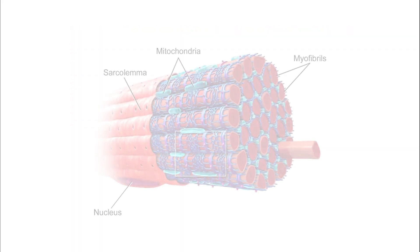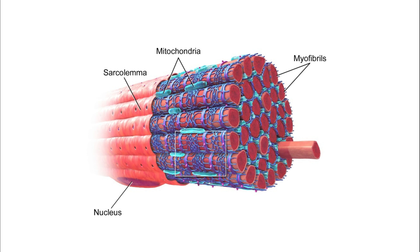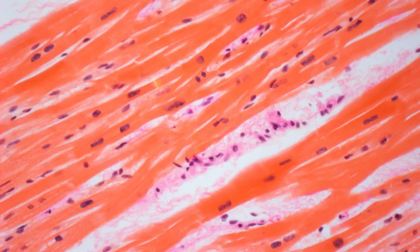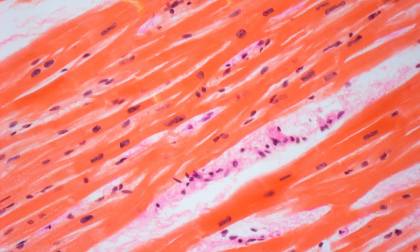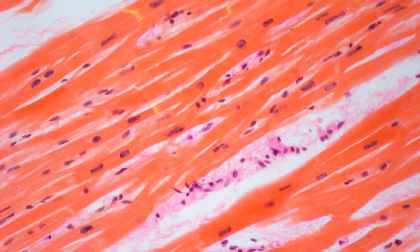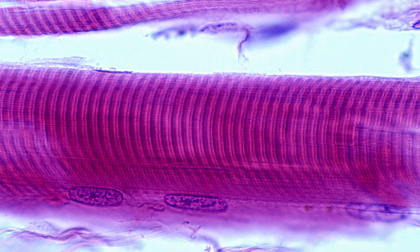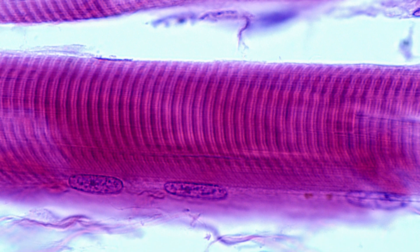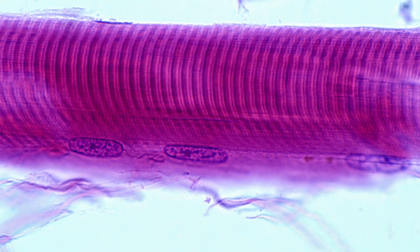Another essential task for the smooth ER in muscle cells is detoxification. This organelle assists in breaking down and removing harmful substances from the cell, contributing to the overall health of the muscle tissue. By keeping the cellular environment clean and free from toxins, the smooth ER helps muscle cells function optimally.